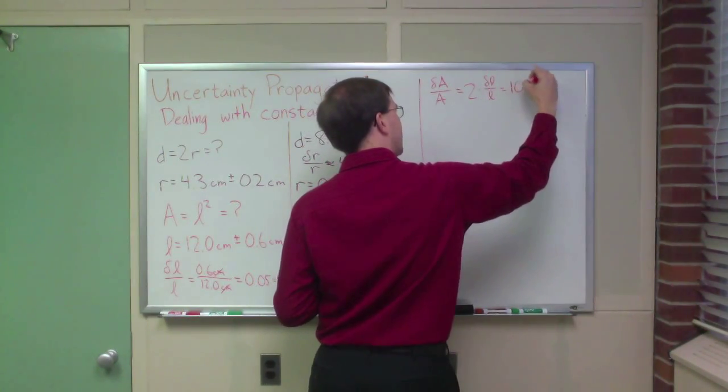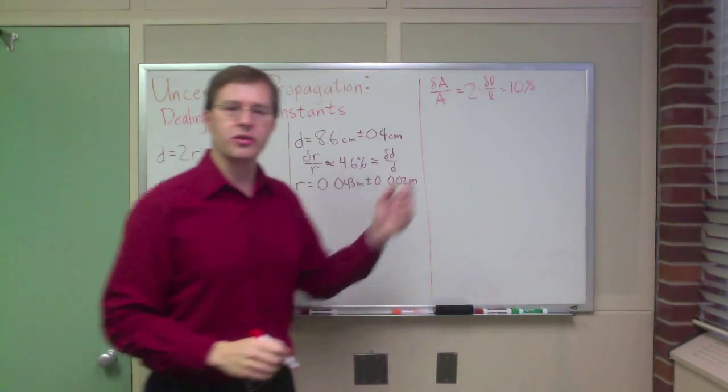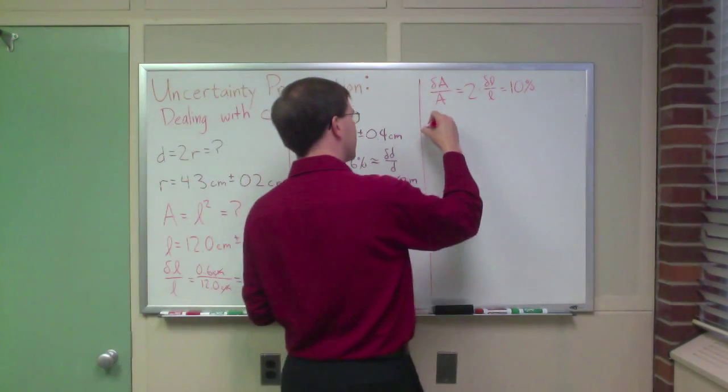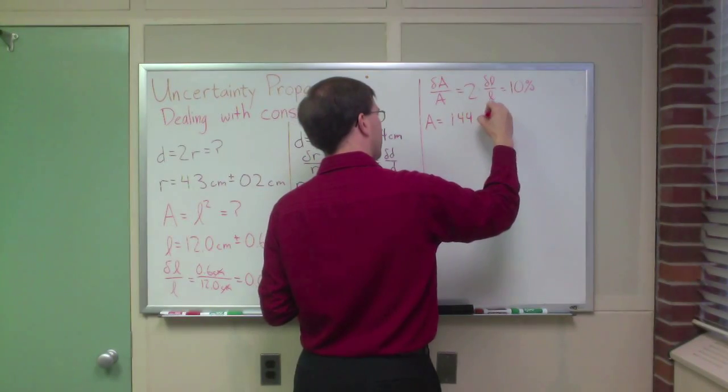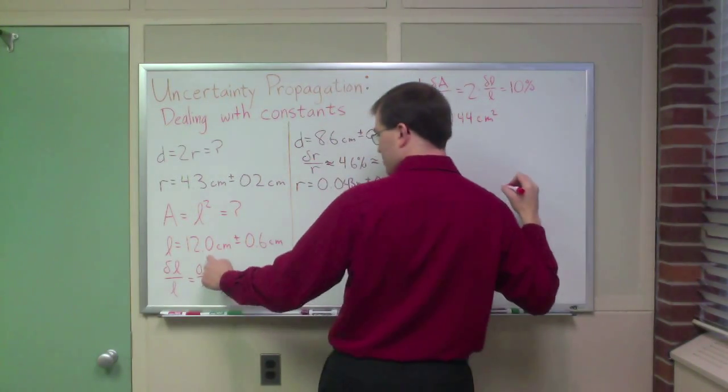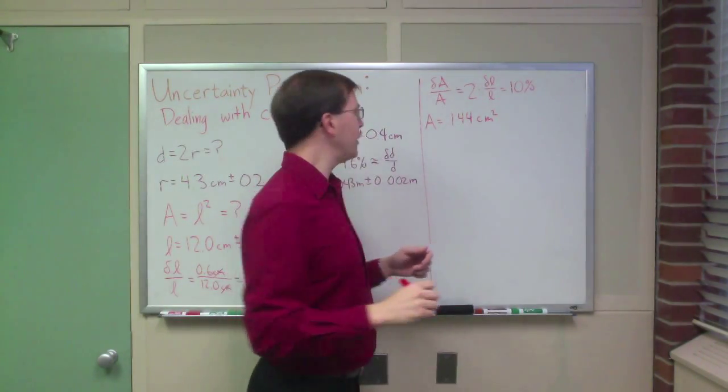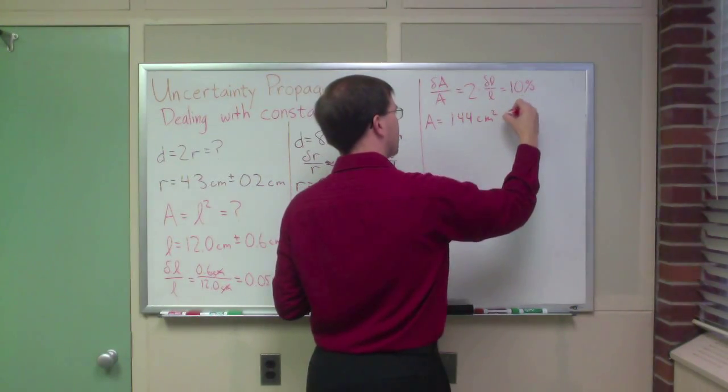So, in this case, I know that my delta A over A is going to be 2 times delta L over L. In other words, 10 percent. My relative uncertainty in the area is going to be 10 percent. In this case, of course, my area is 144 square centimeters, because 12 centimeters squared is 144, and this is going to be plus or minus 10 percent.